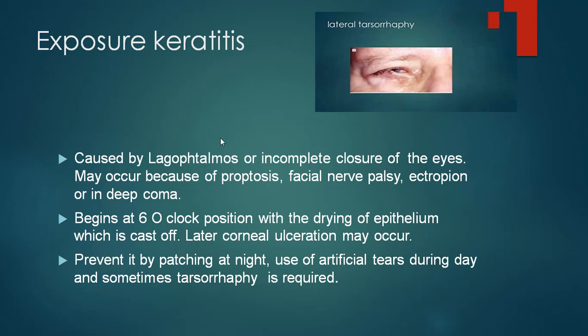In the photograph above, you can see a patient who has undergone tarsorrhaphy, where a small part of the upper and lower lids have been sutured together, causing narrowing of the palpebral fissure both vertically and horizontally. Since the cornea no longer remains exposed, the corneal lesions heal. Tarsorrhaphy is done in a number of conditions — metaherpetic ulcer, as discussed, and also exposure keratitis.